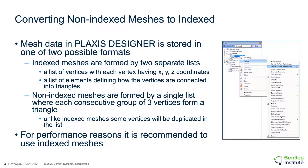Mesh data in Plexis Designer may be stored in one of two possible formats. Indexed meshes are the result of two separate lists: a list of all vertices, with each vertex having an X, Y, and Z coordinate, and a list of elements defining how the vertices are connected into triangles. Non-indexed meshes are formed by a single list where each consecutive group of three vertices forms a triangle. The difficulty with non-indexed meshes is that there is a significant amount of vertex duplication in the list.